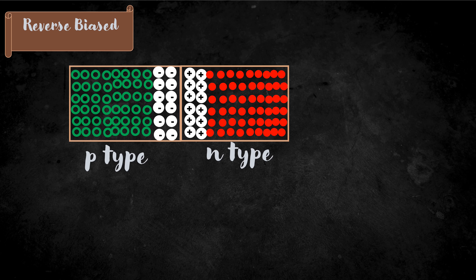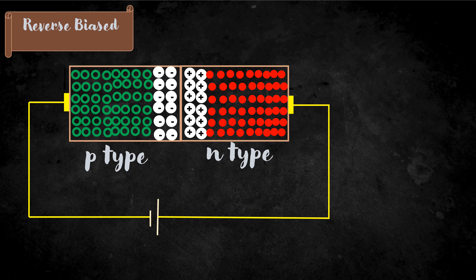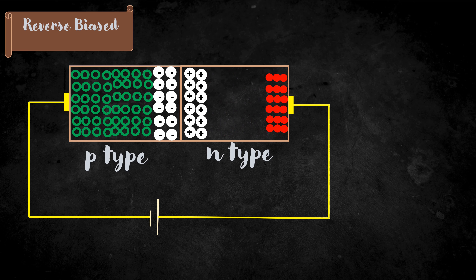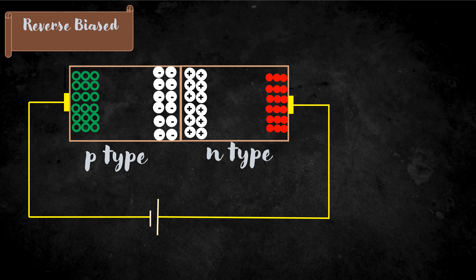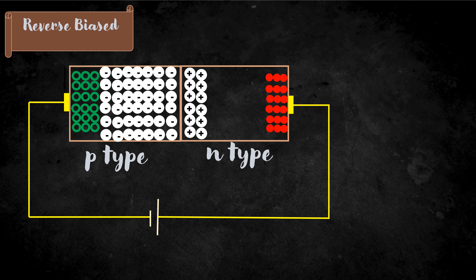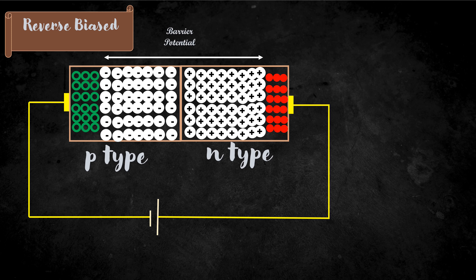During reverse bias, the negative terminal of the battery is connected to the P-type material and the positive terminal is connected to the N-type material. Now the electrons are attracted towards the positive terminal and the holes are attracted towards the negative terminal. Therefore, the barrier voltage is increased and the diode acts as an open circuit. Therefore, we can conclude that the diode does not allow current to flow through it during the reverse bias condition.